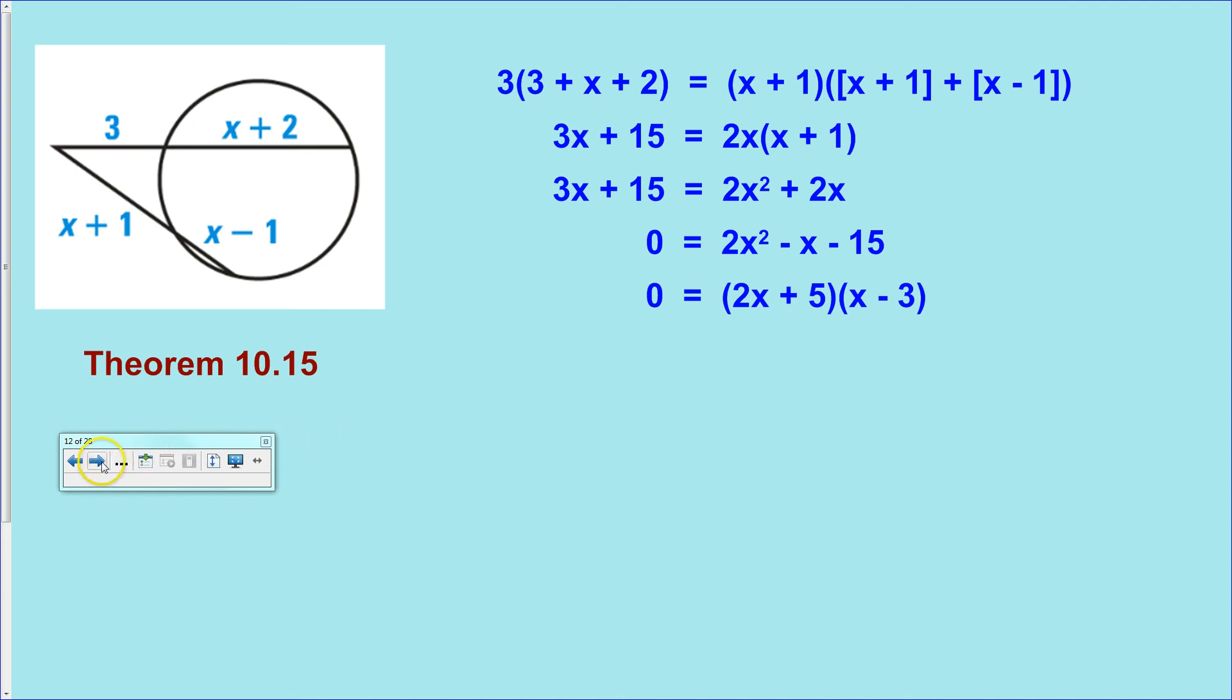Then write your two little baby equations, solve each one of them, and you get solutions of negative 2.5 or 3. Remember, every time you have an x squared, you're going to produce two solutions.